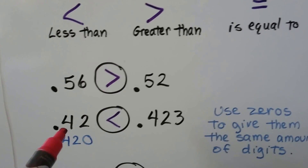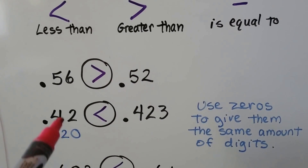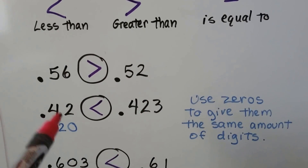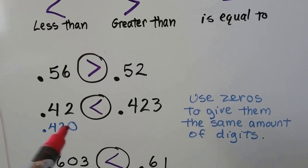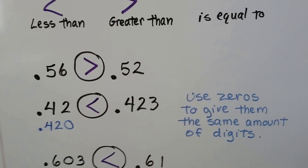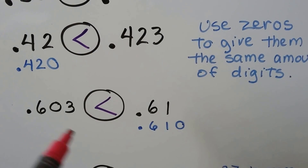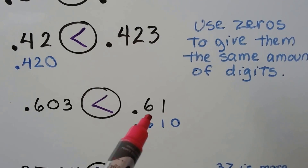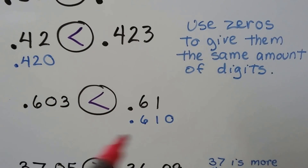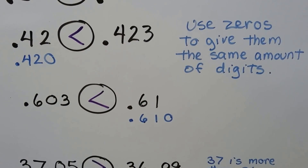For this one, we have 4 and 200 thousandths and 423 thousandths. What we do is give them the same amount of digits. Because this has three digits, we want to give this one three digits too. We can add a zero at the end and then see that 420 is less than 423. Here we have 603 thousandths and 6 and 100 thousandths. If we give them the same number of digits by adding a zero, we can see that this is 603 and this is 610 — so 610 is the bigger one.